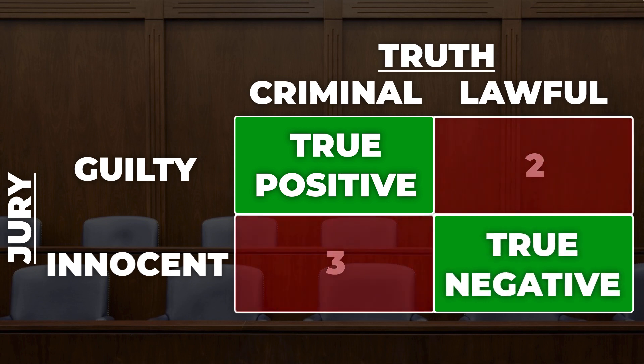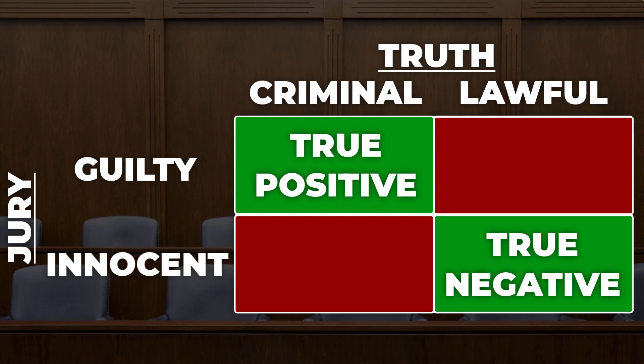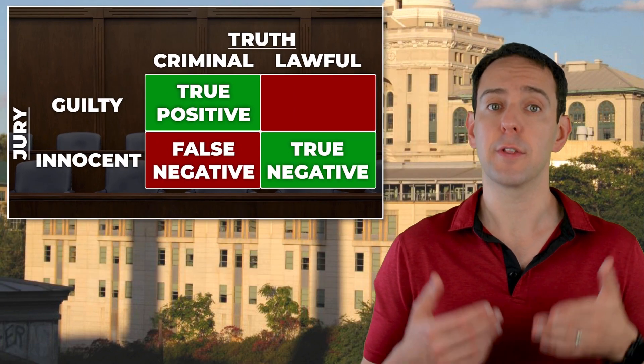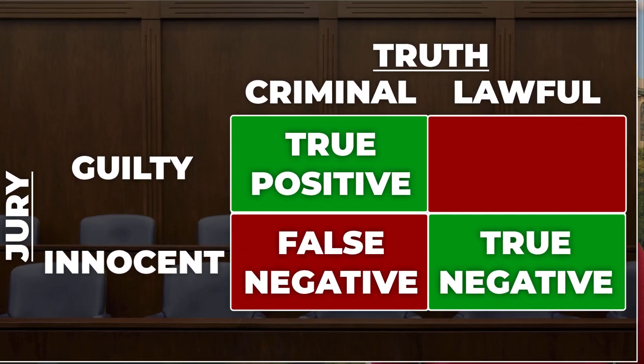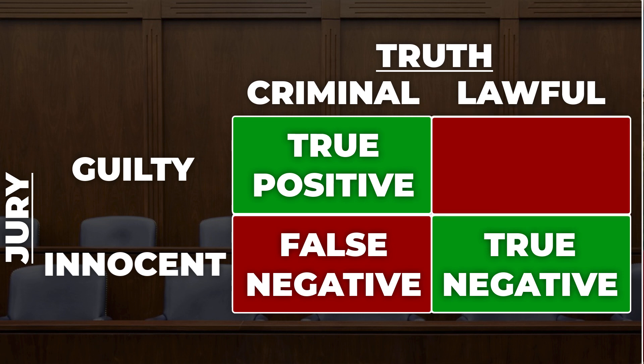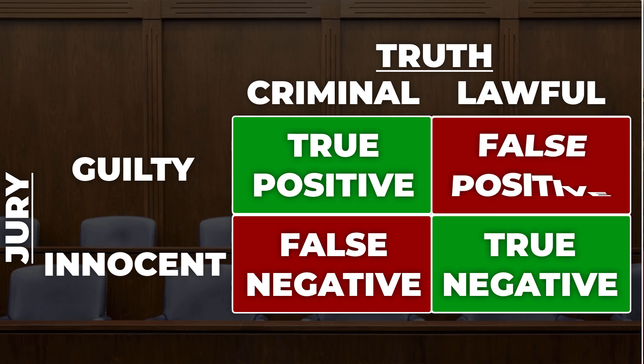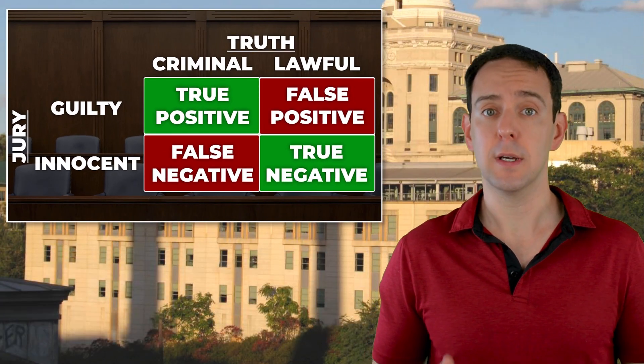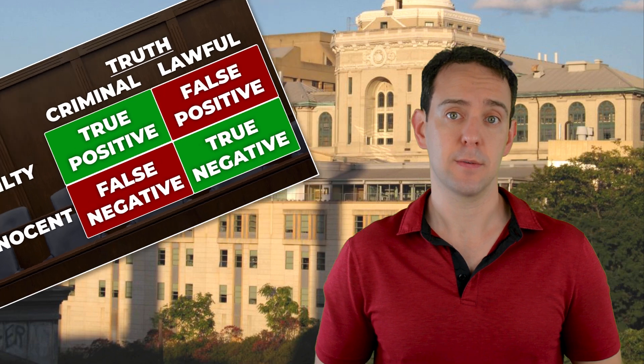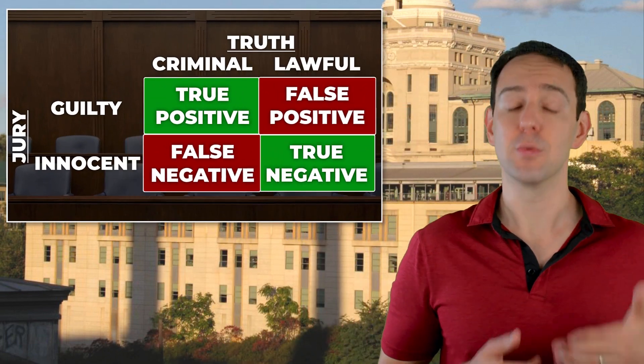However, there are still these two boxes here — these are our errors. This box, where the person on trial really did commit the crime but the jury concludes that they didn't, is what we call a false negative. They concluded that the person was innocent, but they were wrong. And in this box, where the person on trial didn't commit the crime but the jury concluded that they did, is what we call a false positive. The good news is that jurors get it right most of the time — their error rates are hopefully pretty low — but critically, they aren't zero. Jurors are human beings, and human beings make these two types of mistakes.